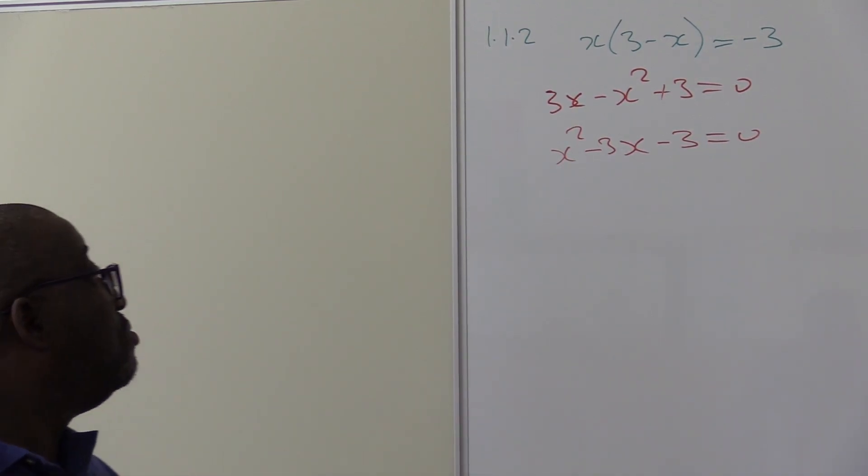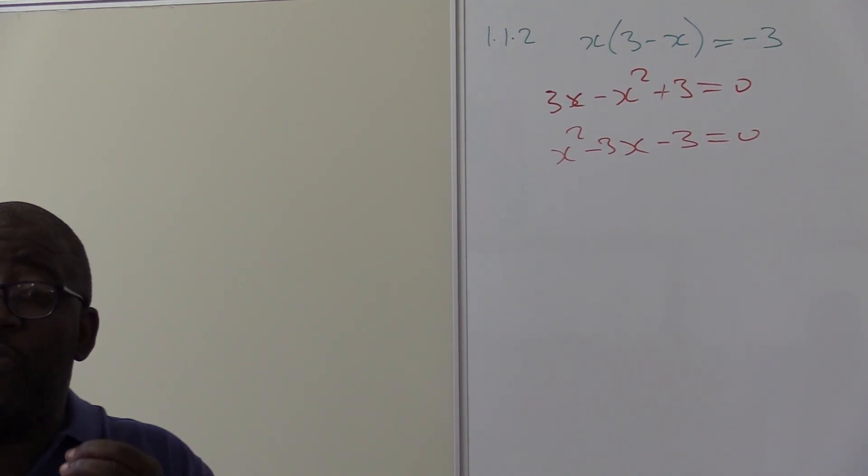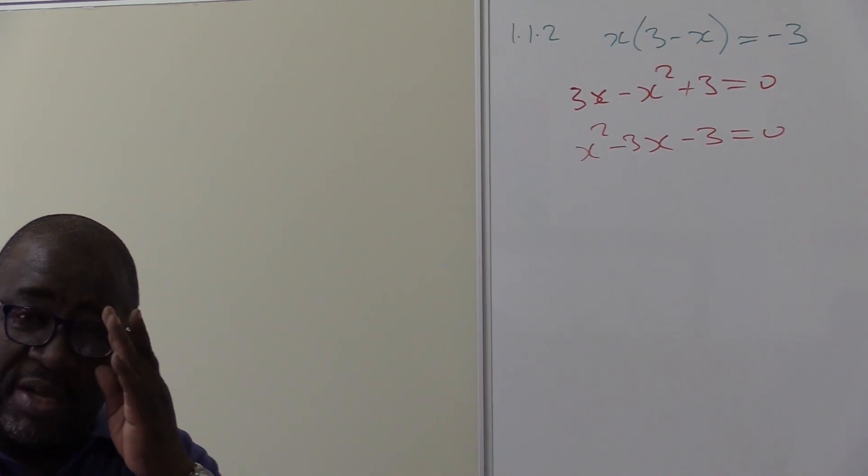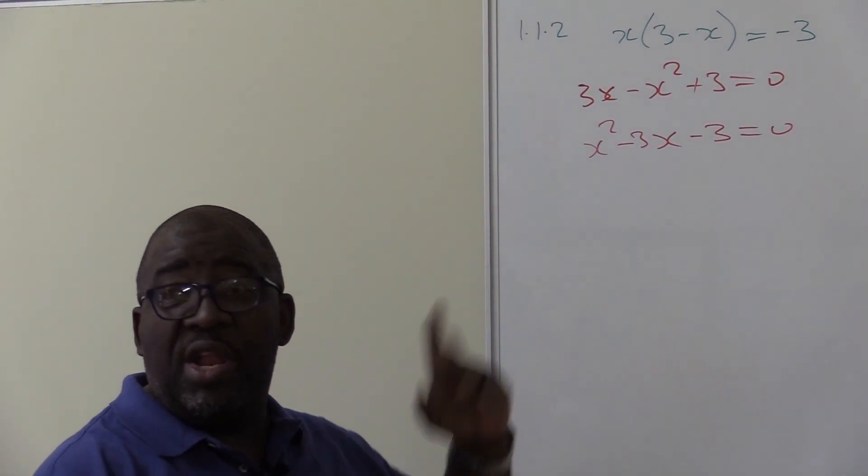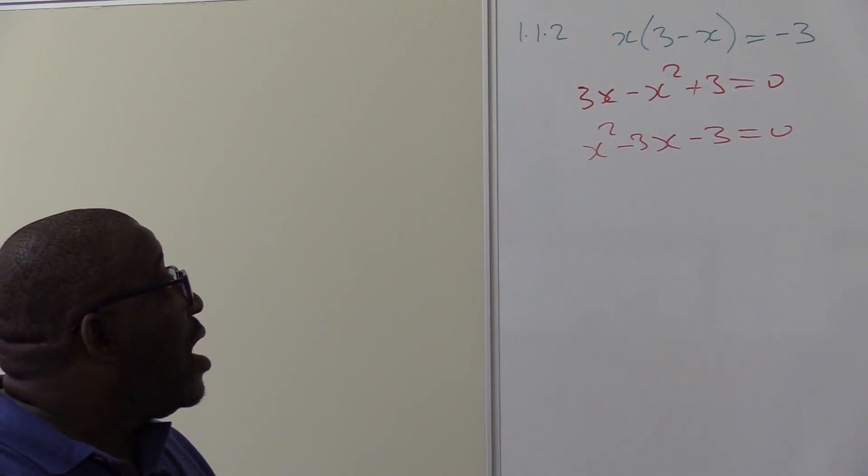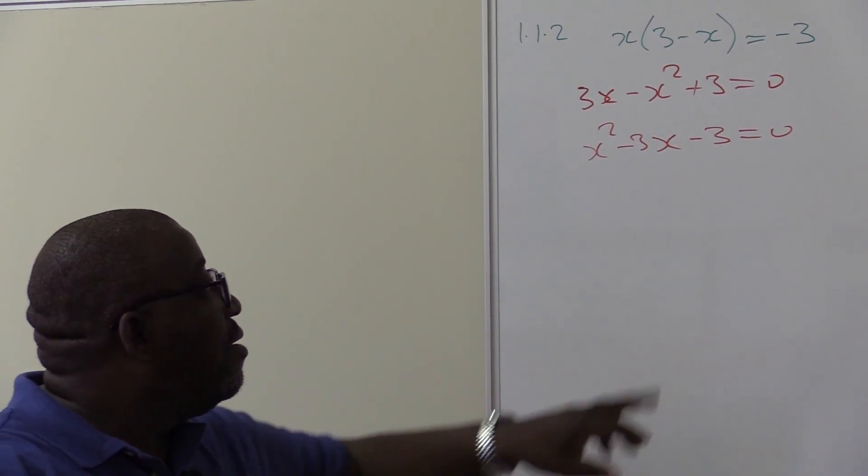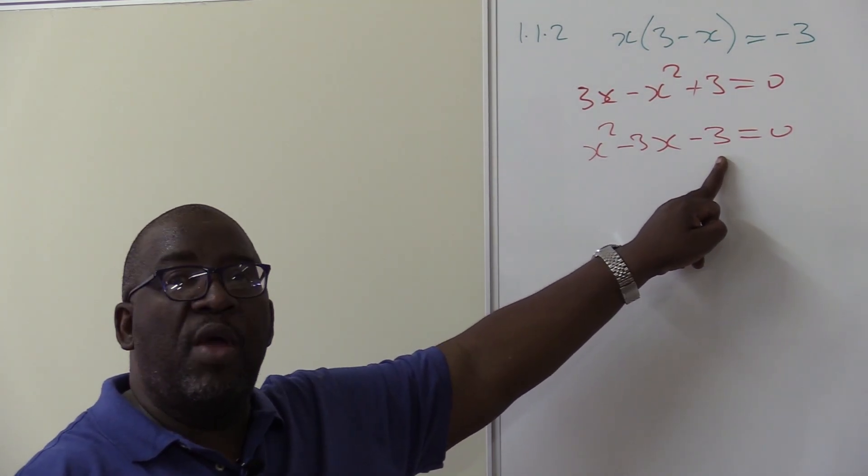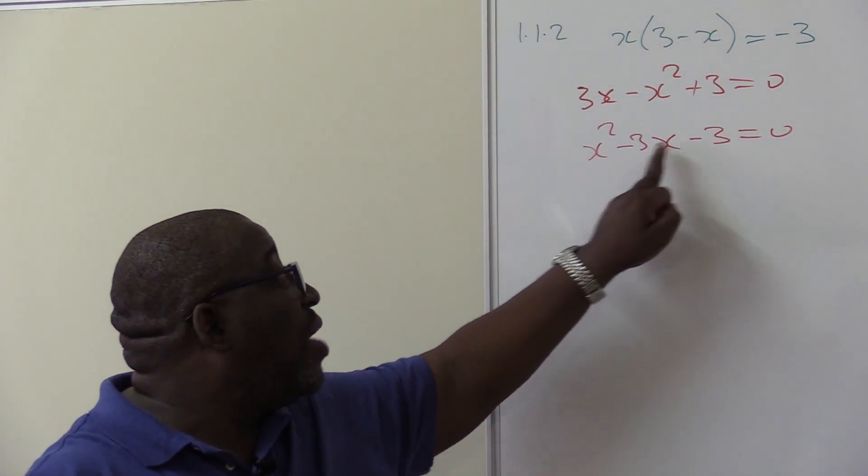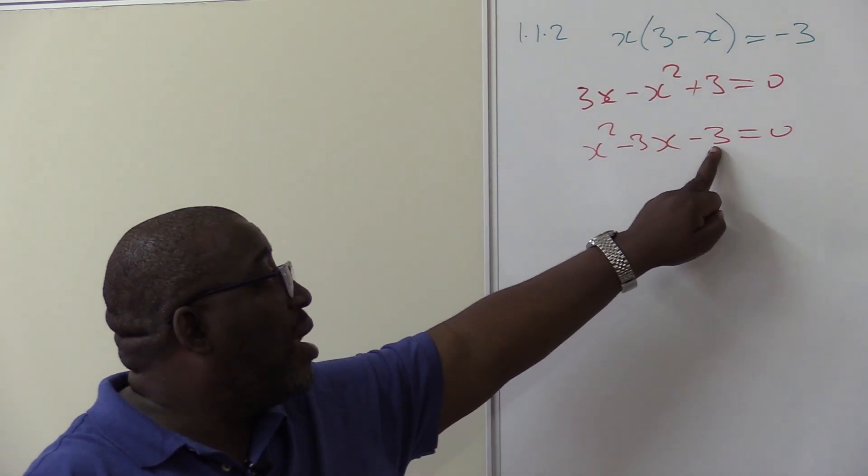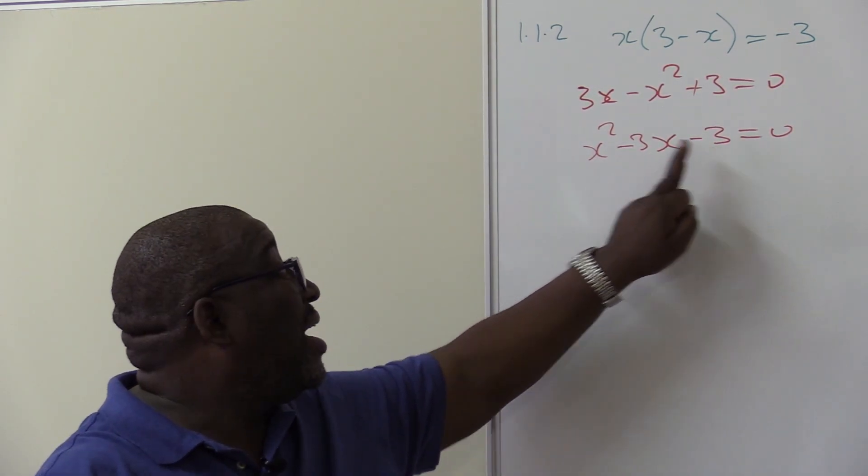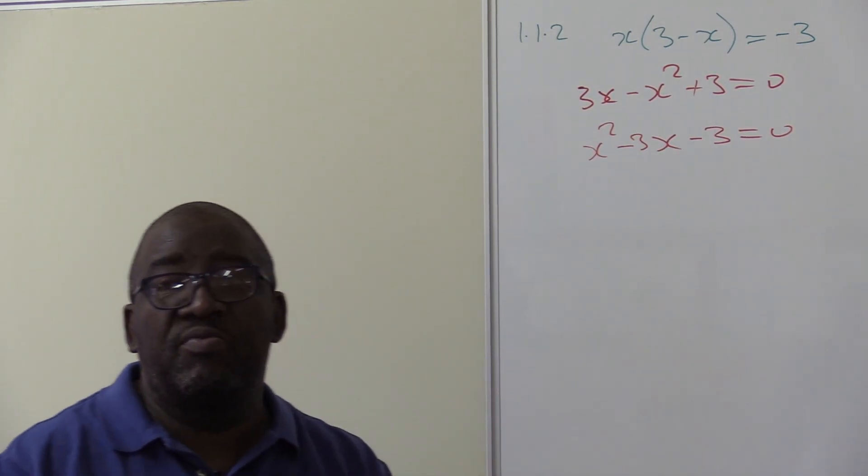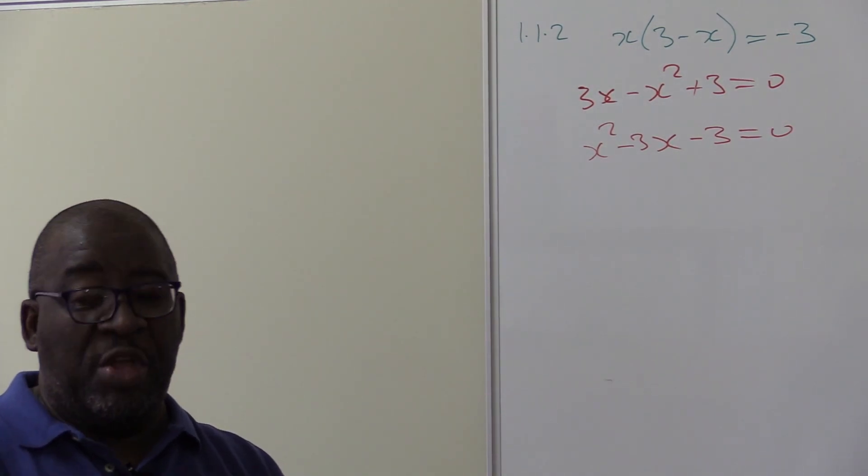Then I can factorize. The first step when you factorize is to look for a common factor. Do we have a common factor here? No, we don't have a common factor. Can we factorize factors of 3 at 3 and 1? There is no way where you can add 3 and 1 and you get 3. There is no way when you can subtract or add 3 and 1 and get 3. So there are no factors. What do we do? We use the quadratic formula.